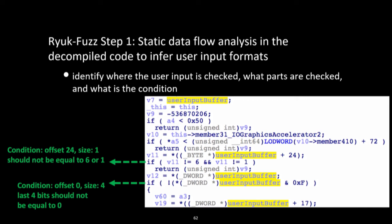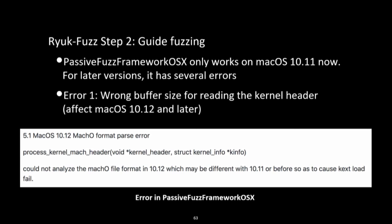In the first step, we perform static data flow analysis on the decompiled code to identify whether user input is checked in conditions, what parts are checked, and what the condition is. For example, we can identify that at offset 24, size 1 should not equal 6 or 1 in order to avoid a failing check. This tells us the driver's requirements on user inputs for different execution paths, and we use this knowledge to guide fuzzing.